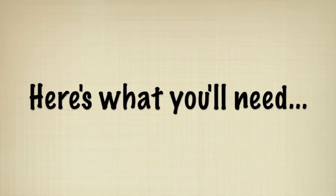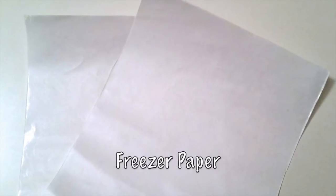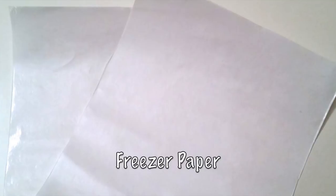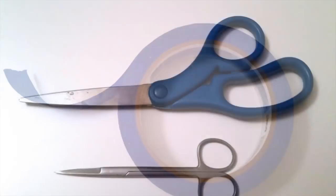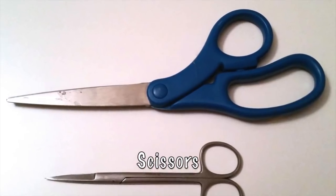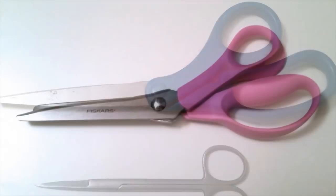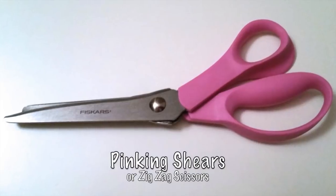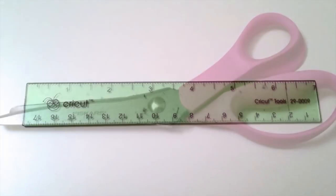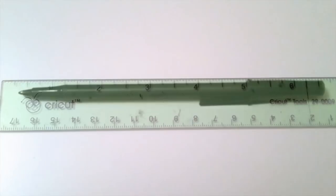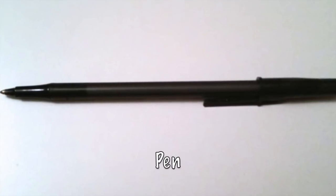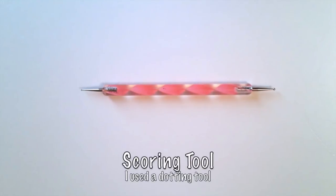Here's what you'll need to get started: freezer paper, painter's tape, scissors, pinking shears or zigzag scissors, a ruler, a pen, and something to score with. I used a dotting tool.